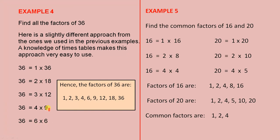If we keep going, the next ones — 9, 12, 18, 36 — have already been used. So using all this working and taking all the different numbers we found, these are all the factors of 36. There are 9 factors of 36 altogether.